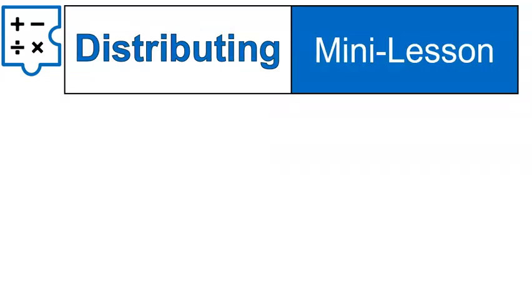First off, the distributive property looks like this. It means three times everything inside the parentheses. What I like to tell my students: everything outside the parentheses gets multiplied times everything inside the parentheses. That's the distributive property.